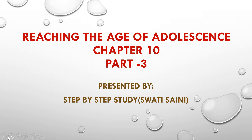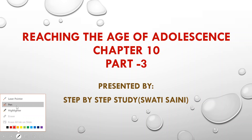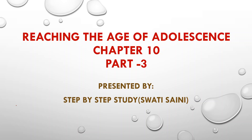Hello and welcome back. Today we are going to start Part 3 of Chapter 10, that is 'Reaching the Age of Adolescence.' We have covered the two previous parts. In the last part we covered how the sex of a baby is determined — it is determined by the male, since the female has two X chromosomes. Now let's discuss hormones other than sex hormones.